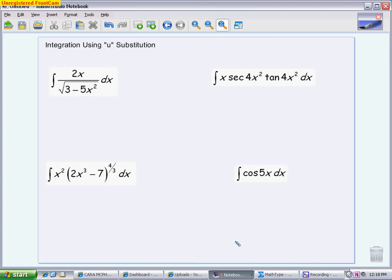When you look at this first one, your inner function is the piece under the radical. A lot of times, problems with radicals are the easiest to identify because you're just looking beneath the radical. So underneath the function, you have 3 minus 5x squared. We call that u, that innermost function.